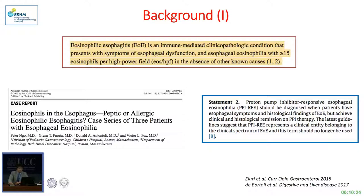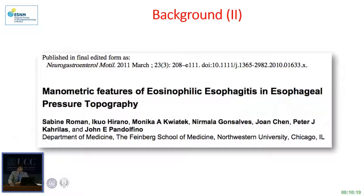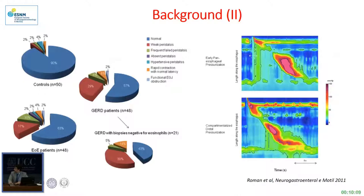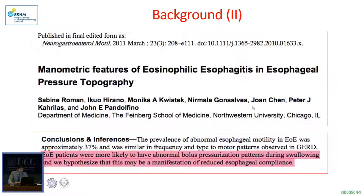In literature, esophageal motility abnormalities in EoE patients are reported. In particular, the picture on the left shows that the percentage of esophageal motility abnormalities is higher in EoE patients and GERD patients with respect to controls, but there were no differences between EoE and GERD patients. Panesophageal pressurization is more specific for EoE, and researchers concluded that abnormal bolus pressurization pattern during swallowing may be a manifestation of reduced esophageal compliance.